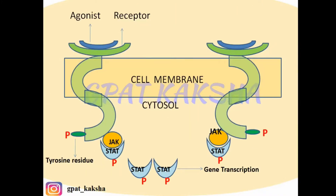We can understand this better with the help of the diagram. This is a diagram of Janus kinase STAT binding receptor. On binding with the agonist, these receptors get activated and get dimerized — meaning they form pairs with each other. Upon dimerization, these receptors bind to JAK, which is a kind of protein kinase, Janus kinase.